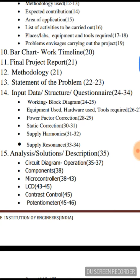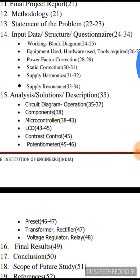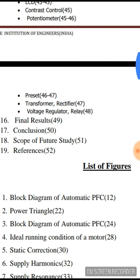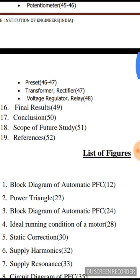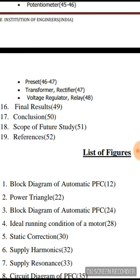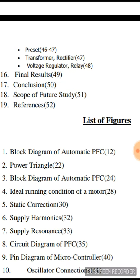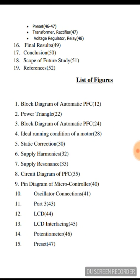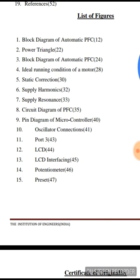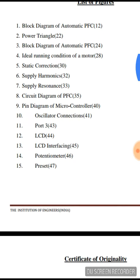The final project report contains the following aspects: methodology, statement of the problem, input data structure, questionnaire, working of the project, analysis and solutions, description of the project, final results, conclusions, scope of future study — what this project can contribute to future generations — and references used to make this project, whether internet, project guide, or other sources. It is also important to mention in the contents page the list of figures, including their titles and corresponding page numbers.